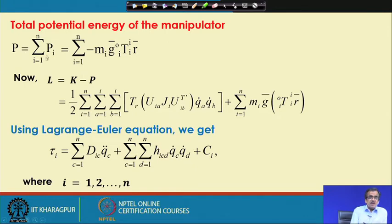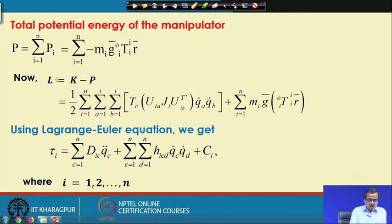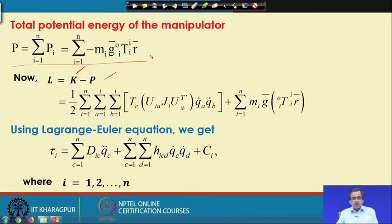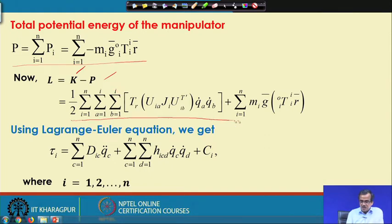The total potential energy P is nothing but summation i from 1 to n of Pi, which equals summation i from 1 to n of minus Mi, g_bar, Ti with respect to 0, Ri with respect to i. The Lagrangian is nothing but kinetic energy minus potential energy. We know the expression for kinetic energy and the expression for potential energy, so we can write K minus P — this is the expression for the whole Lagrangian for the robotic system.